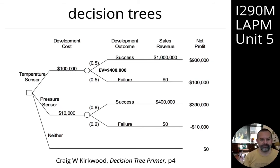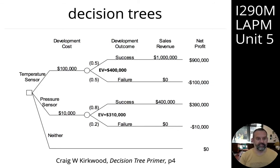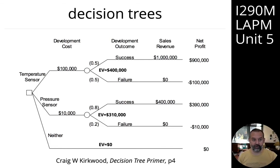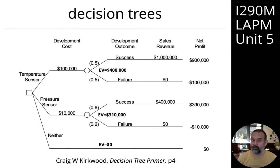For the pressure sensor, we multiply 390k by 0.8 and add minus 10k multiplied by 0.2, giving an expected value of $310,000. The expected value of building neither is zero. This tells us the rational choice is to build the temperature sensor, which has the highest expected value of $400,000, compared to $310,000 for the pressure sensor, and zero for building neither.